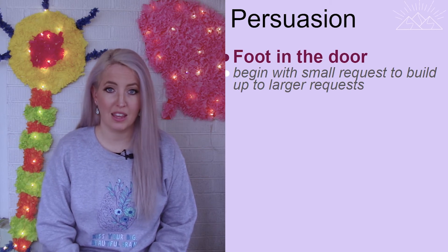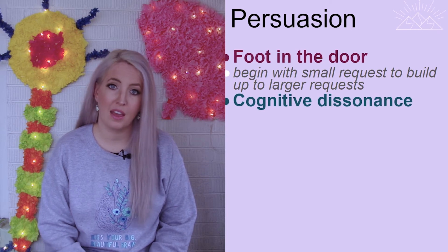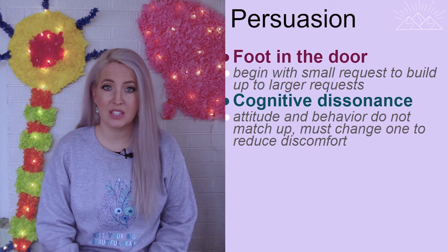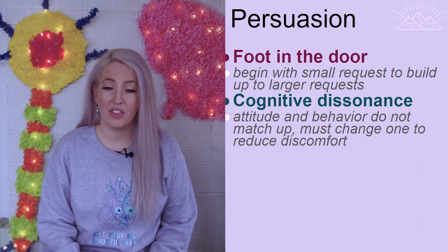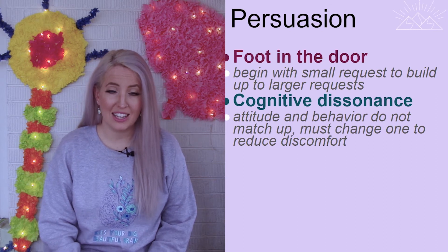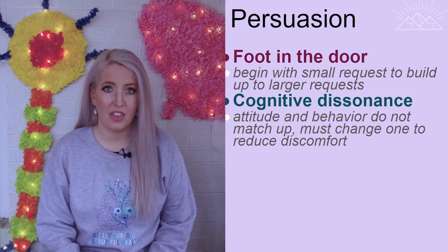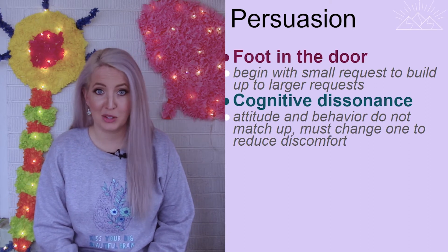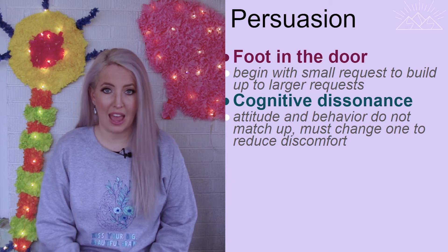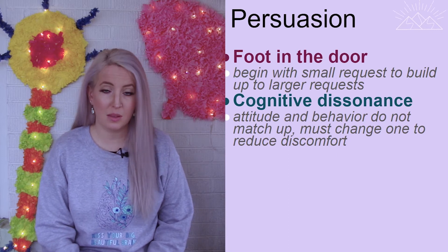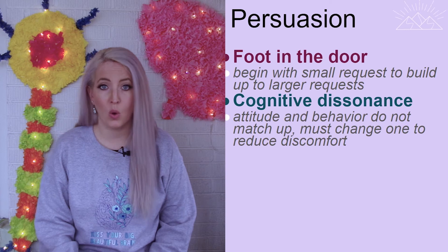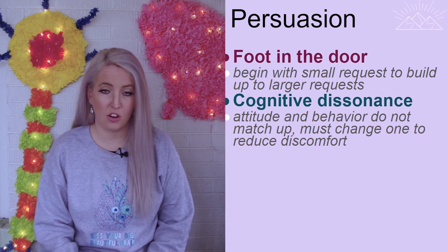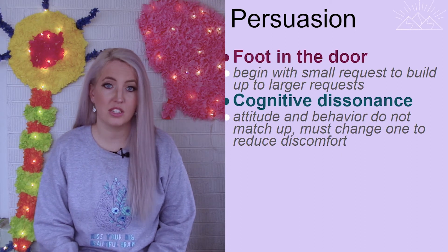Something else we can do to persuade someone is tap into what's known as cognitive dissonance — when our attitude and behavior don't match up. For example, asking someone to sign a pledge to not text and drive. The next time they go to pick up their phone, that dissonance is planted: their attitude that texting and driving is bad conflicts with their behavior. Something has to change — either they convince themselves it's okay, or they put their phone down.